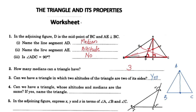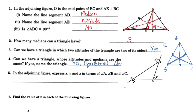Here, the altitude and the median are the same line segment — this is the perpendicular. For all three sides of the triangle, the altitude and median coincide. This is the equilateral triangle. So the name of the triangle is the equilateral triangle.